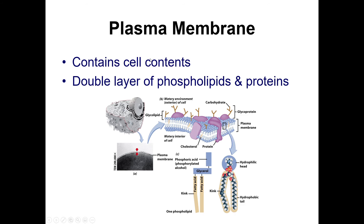In every cell there is a plasma membrane — the outer layer of the cell that contains the cell contents. It's a double layer of phospholipids and proteins that keeps things on the outside and inside separate. A phospholipid is a large molecule with a head that likes water and a tail made of fatty acids that does not like water. The water-liking parts face inward and outward, while the water-avoiding parts are in the middle, creating a wall around the cell's contents. The proteins embedded in the membrane allow certain things to enter or exit.